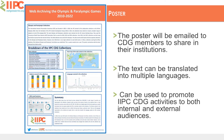The different images in the breakdown of the IIPC collections look at the data collected, the geographic spread of the collections, the subjects covered, and also the languages covered. And then there's the additional web archive collection we have on the National Olympic and Paralympic Committees, which was established in 2016.